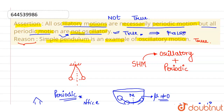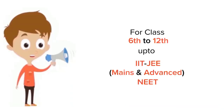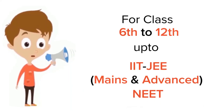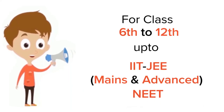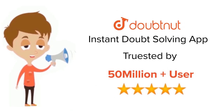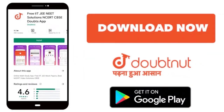So the intersection of both parts of the assertion is not true — the assertion is false. But the given reason — that a simple pendulum is an example of oscillatory motion — is true. I hope you understood.